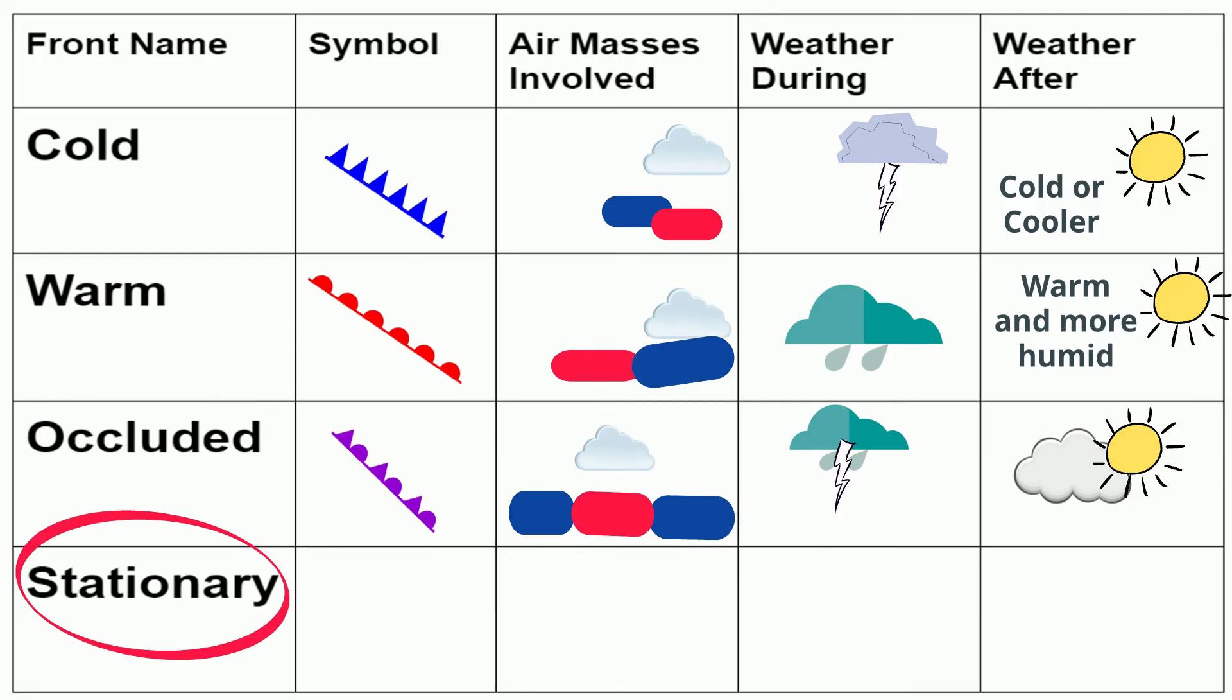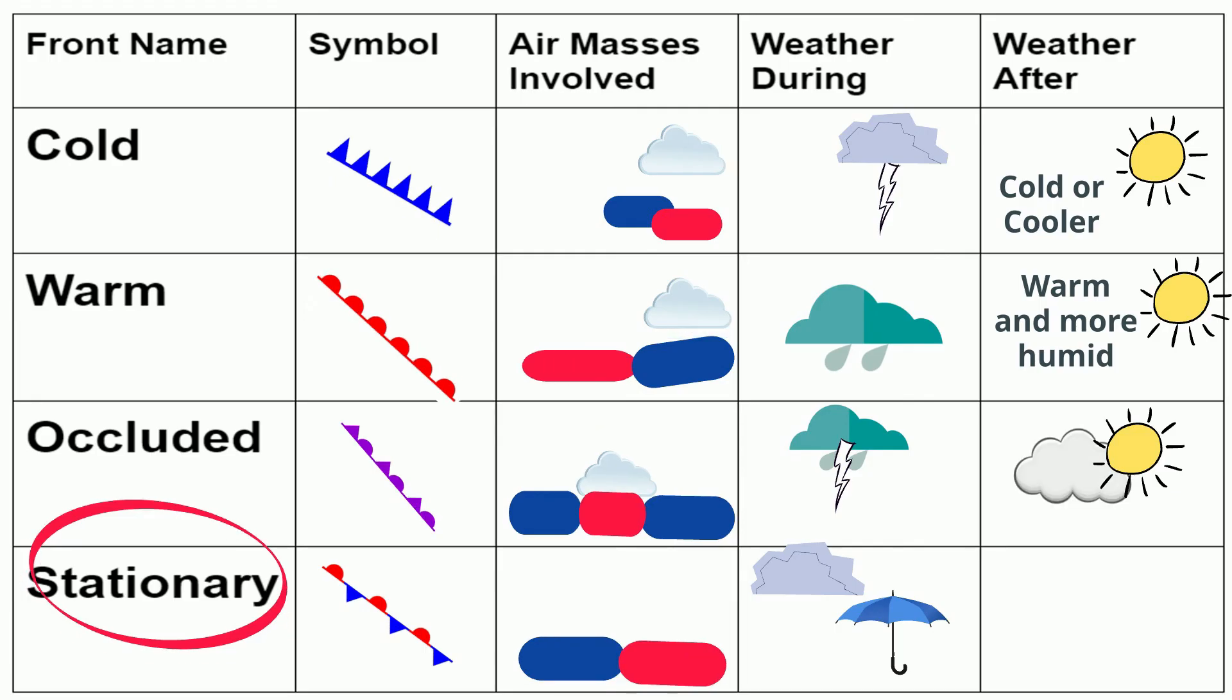A stationary front and here's the symbol. A stationary front occurs when you have cold air mass and a warm air mass of equal density. And they collide but because of the equal density they remain stationary. A stationary front may bring several days of rain or snow. Depending on the wind direction you may get warm or cooler air as the front passes and fair skies.